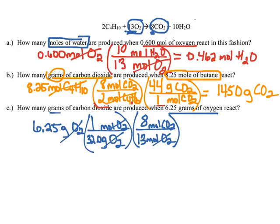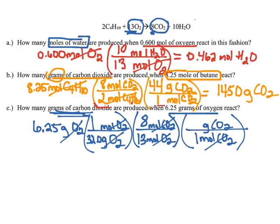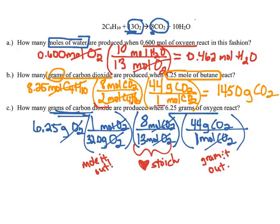Now I have moles of CO2, but the problem asked me for grams of carbon dioxide, so I have one more conversion factor. I've got to turn moles of CO2 into grams of CO2 using the molar mass. I'm only doing the mass of one mole, so do not multiply through by the coefficient — you've already done that in the stoichiometry step. Stoichiometry is always at the heart of changing from one substance to another. When I do it in my calculator, I end up getting 5.29 grams of CO2.